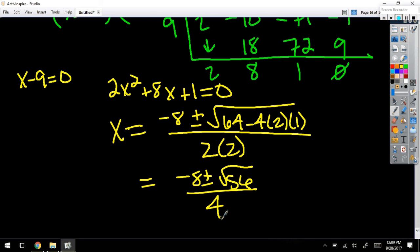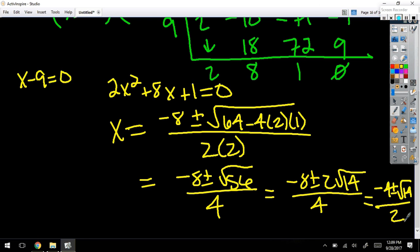Take a 2 out of everything. I'm out of room... So that's -4 ± √14 over 2.